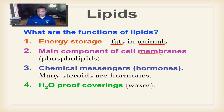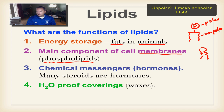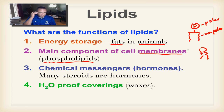Second function: lipids are the main component of the cell membrane, specifically a special type of lipid called a phospholipid. A phospholipid has a glycerol molecule, a couple of fatty acid chains, and a phosphate group sticking out. We draw them simply as a circle for the polar head and two lines for the nonpolar tails. This polar/nonpolar feature will be very important when we study cell structure in chapter 7.